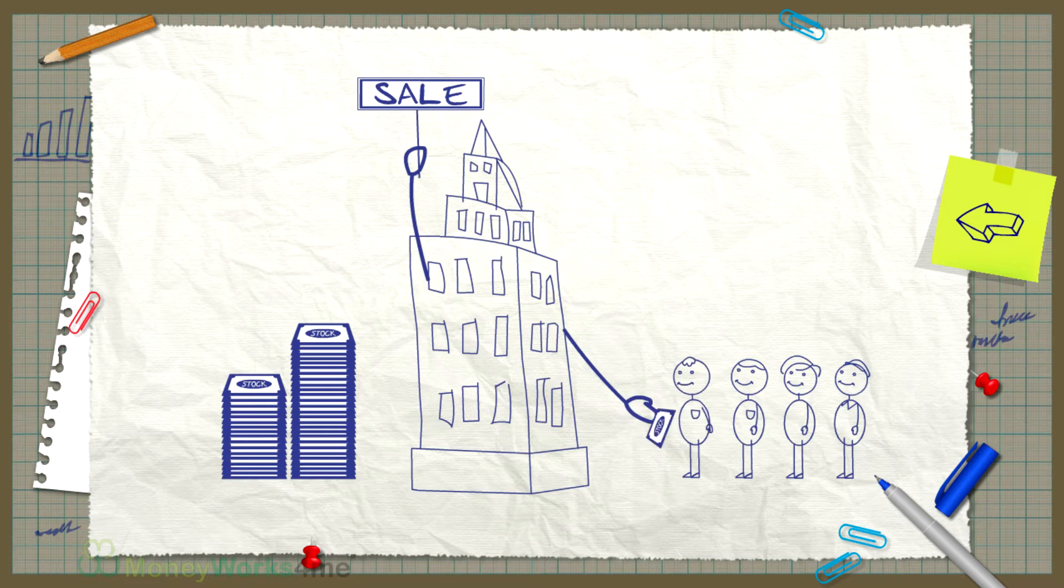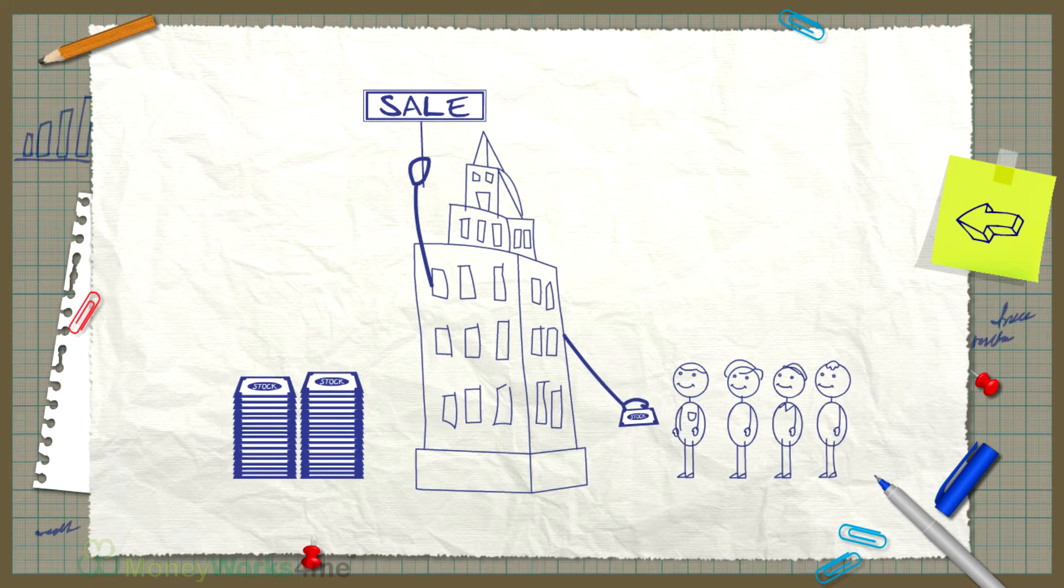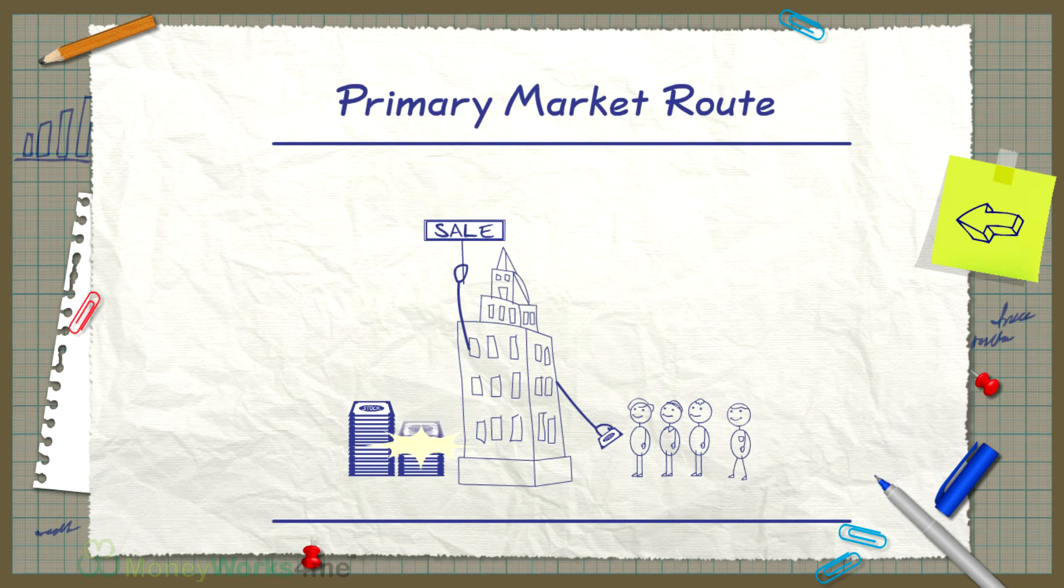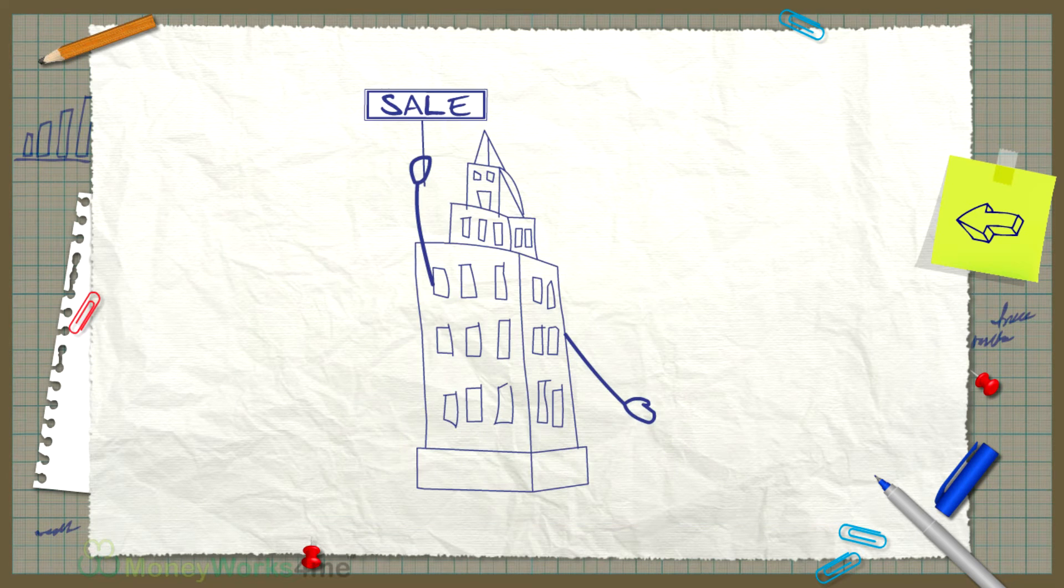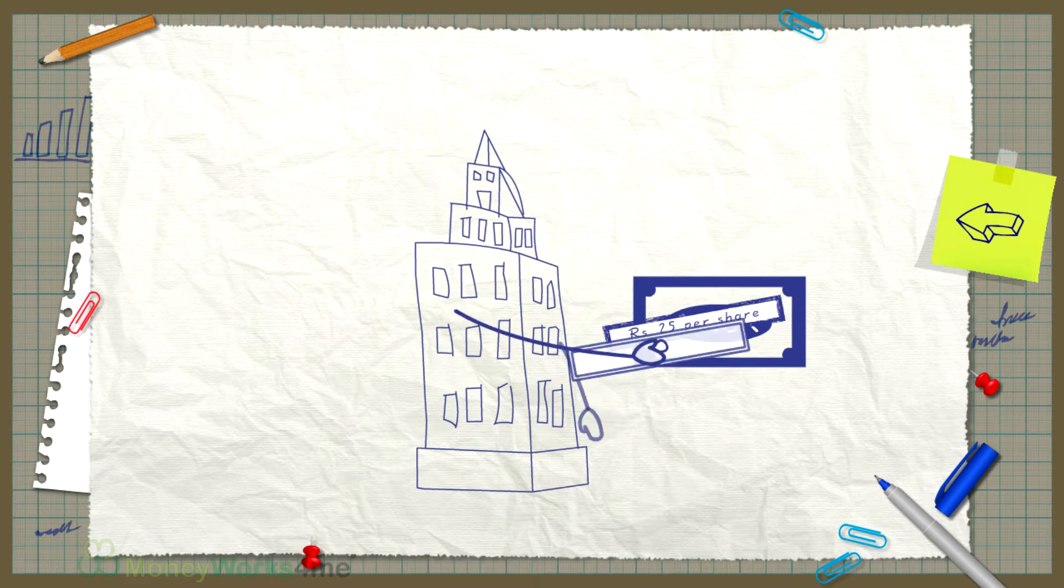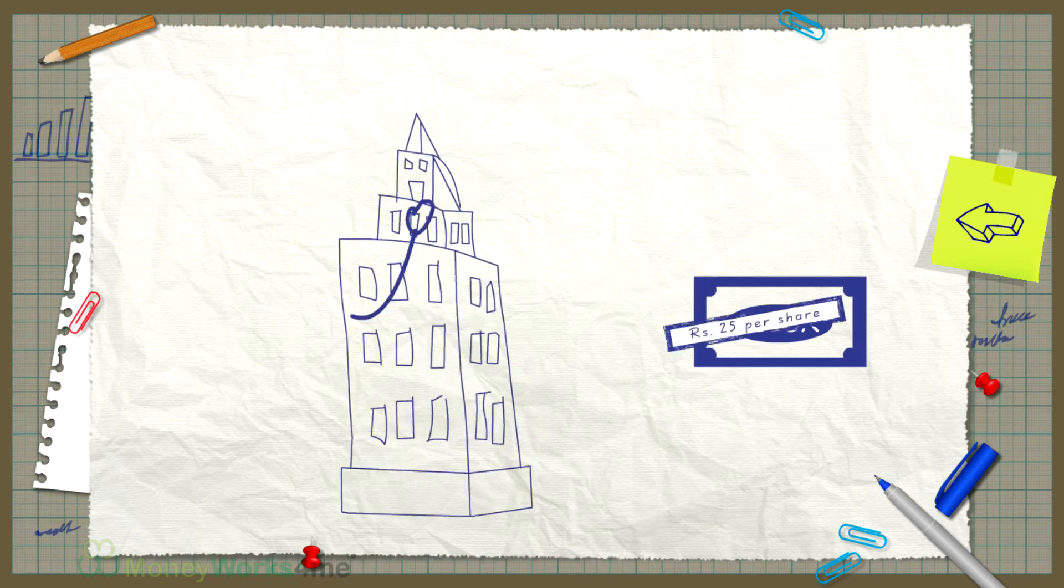When the company sells the shares directly to the public, it is said to have issued shares via the primary market route. The company decides on the price band at which it proposes to sell the shares.